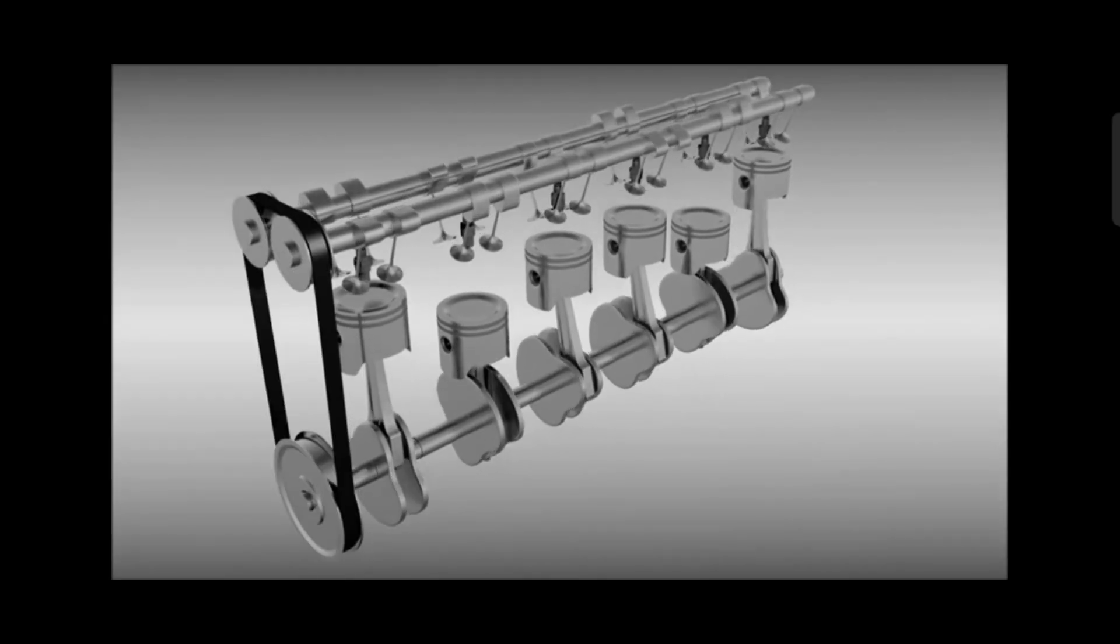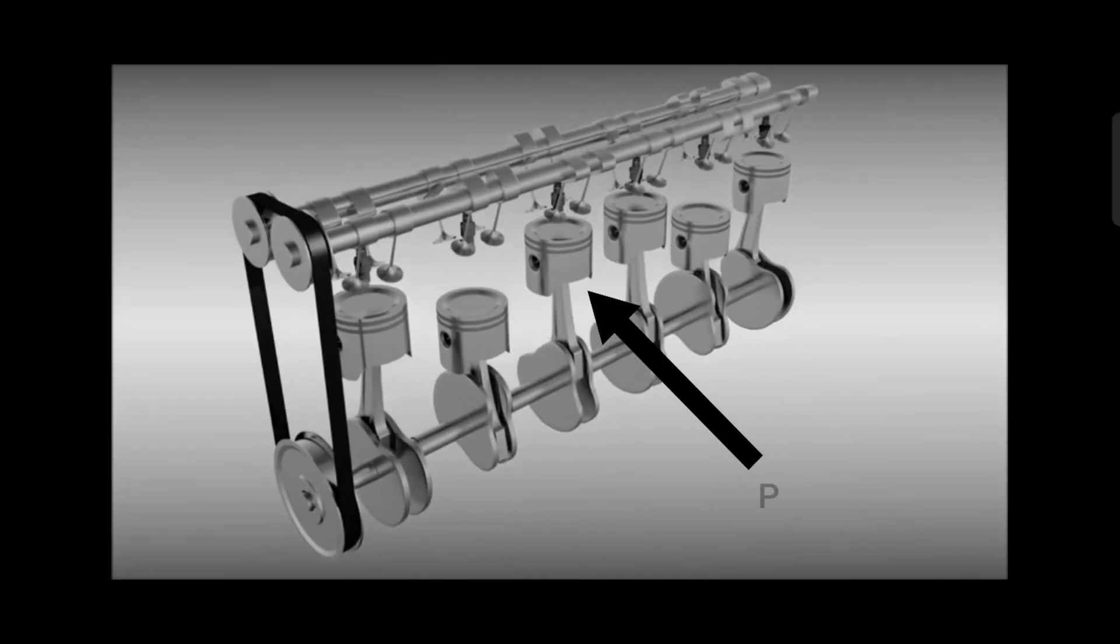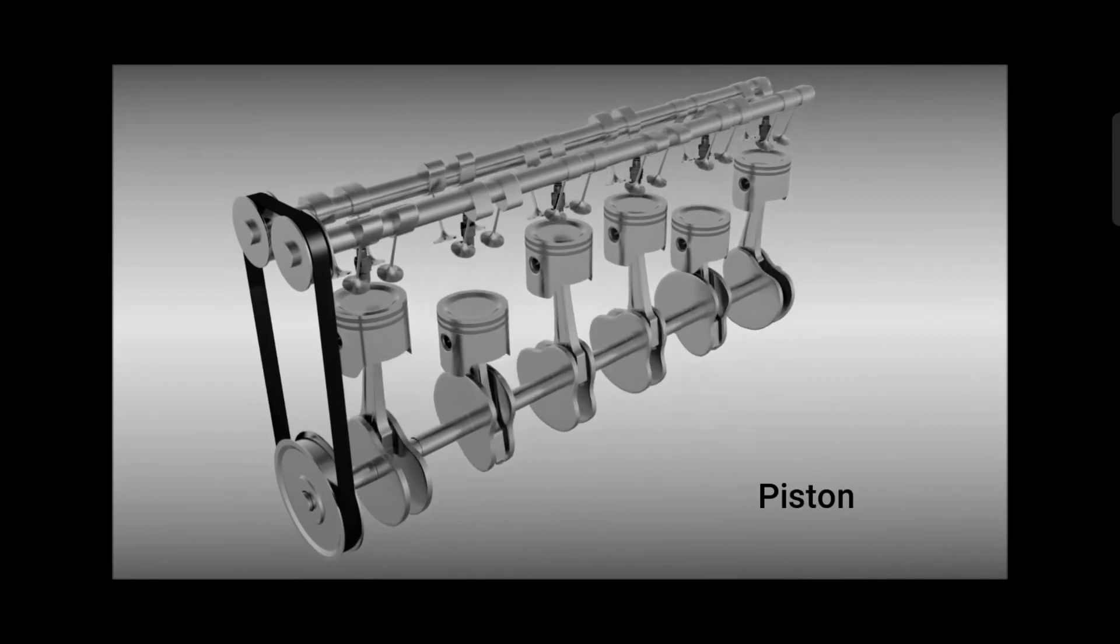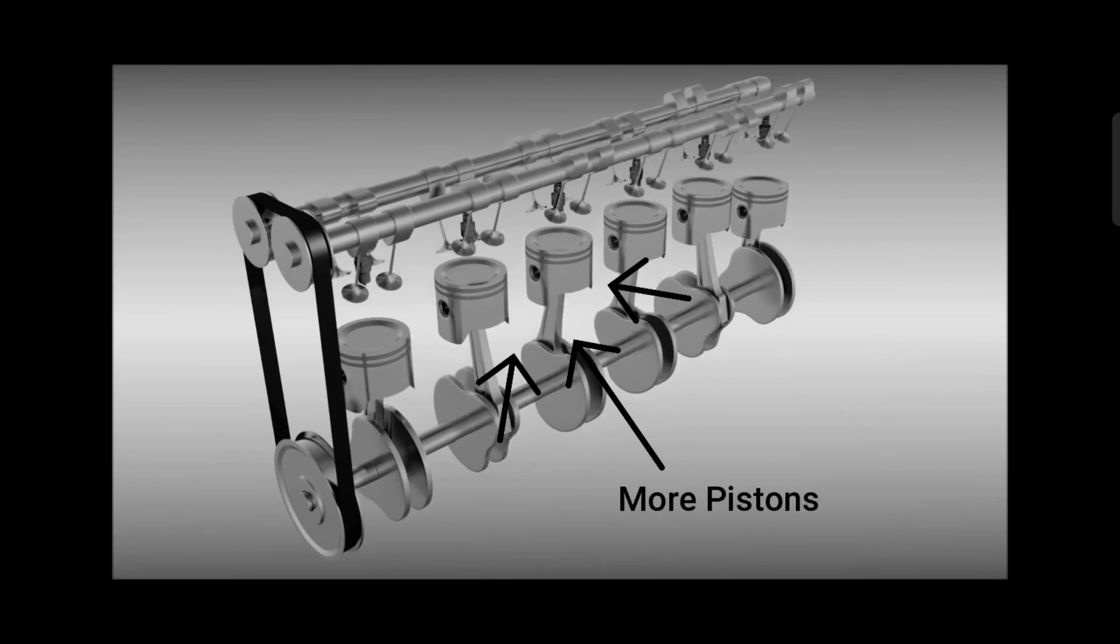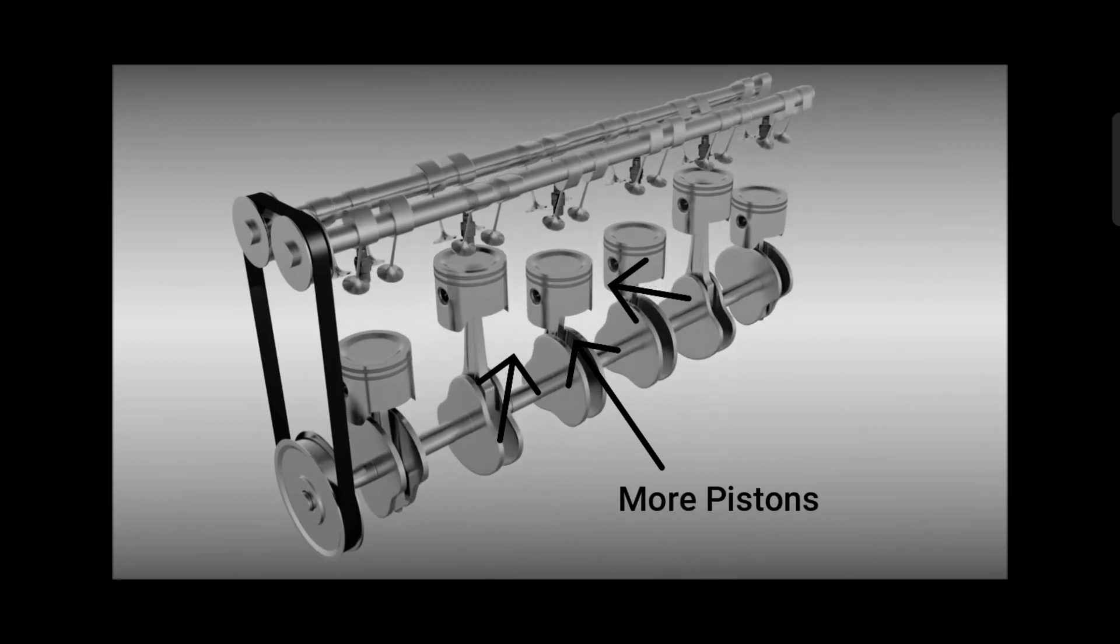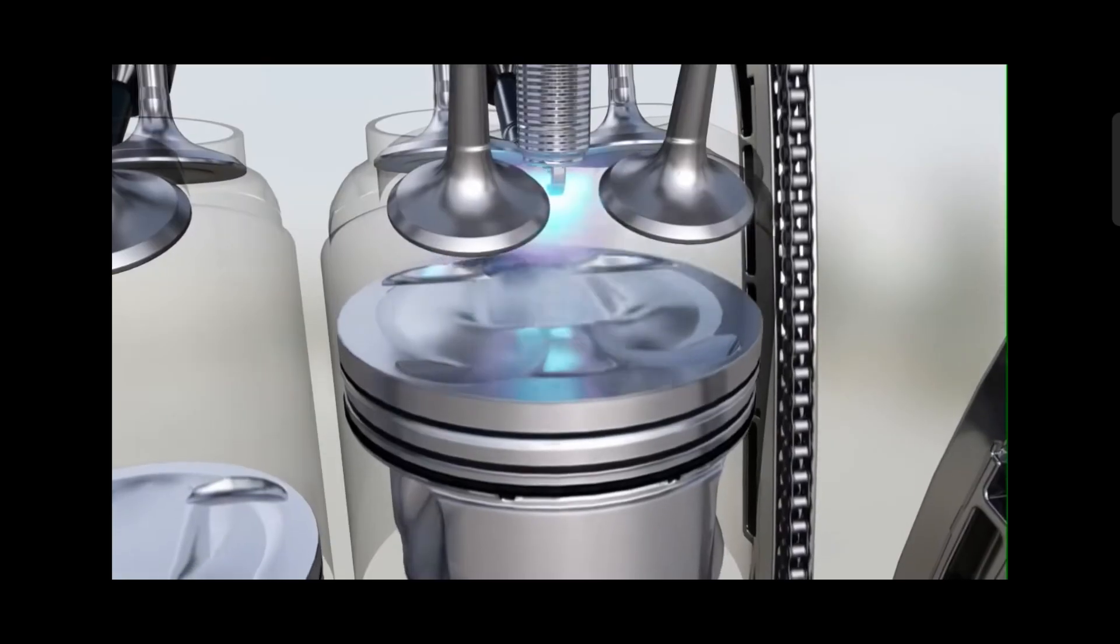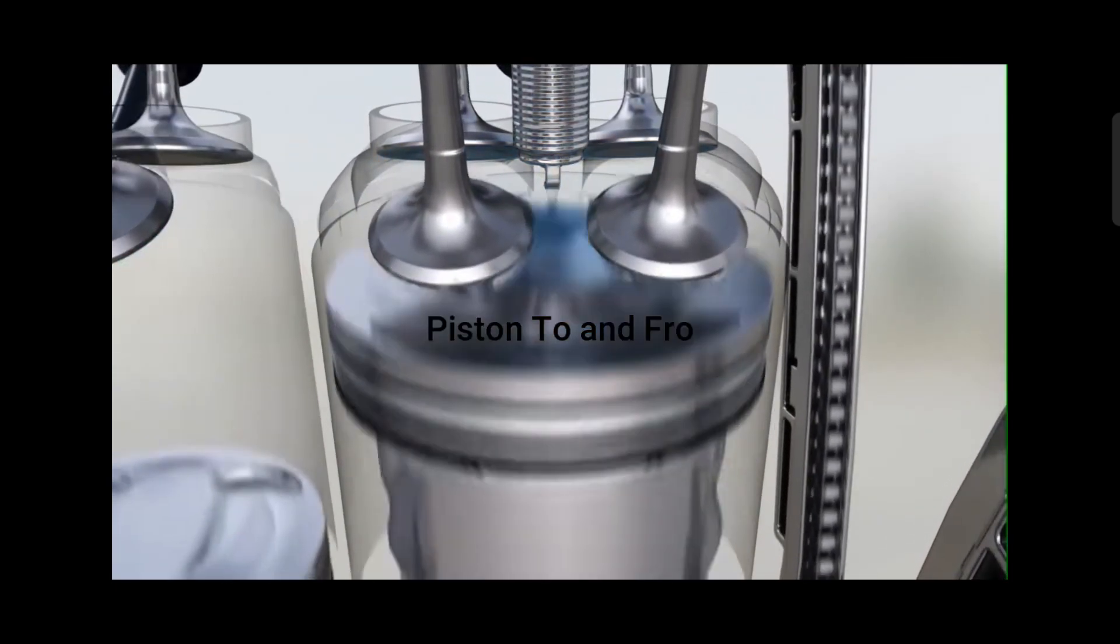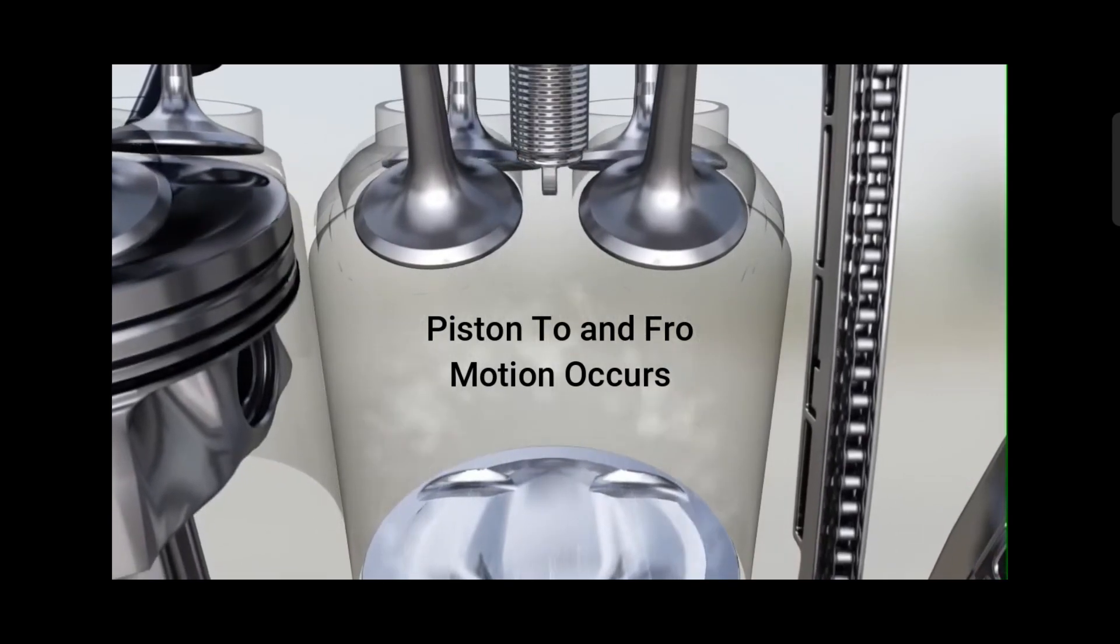The main component of a reciprocating engine is a piston which is used to convert pressure into a rotating motion. There may be one or more pistons in an engine, each of them is located inside a cylinder. When pressurized gas is injected and heated inside the cylinder, the piston initiates reciprocating or to and fro motion.